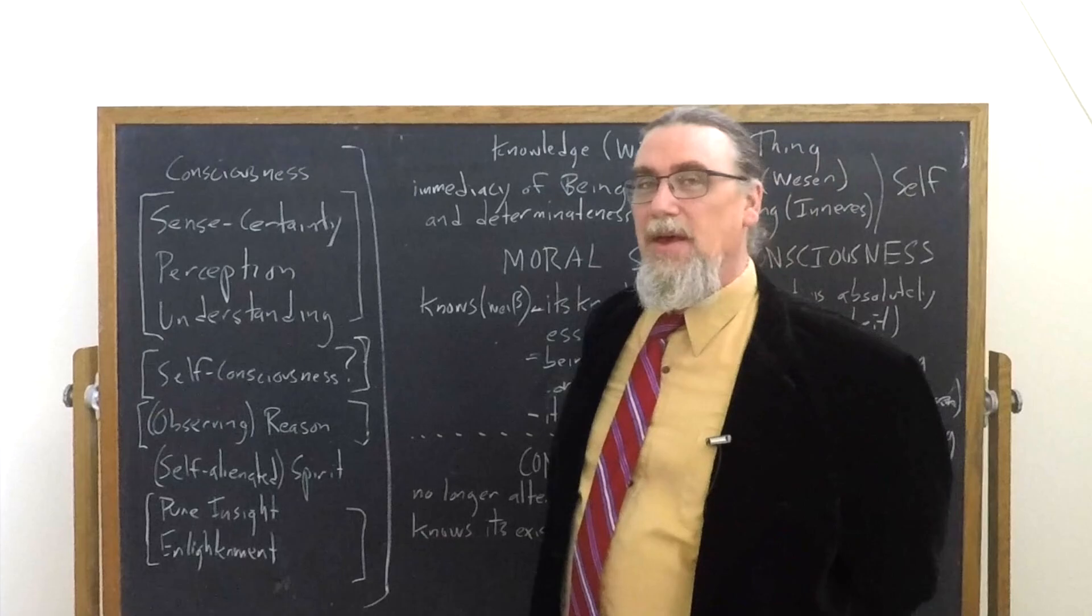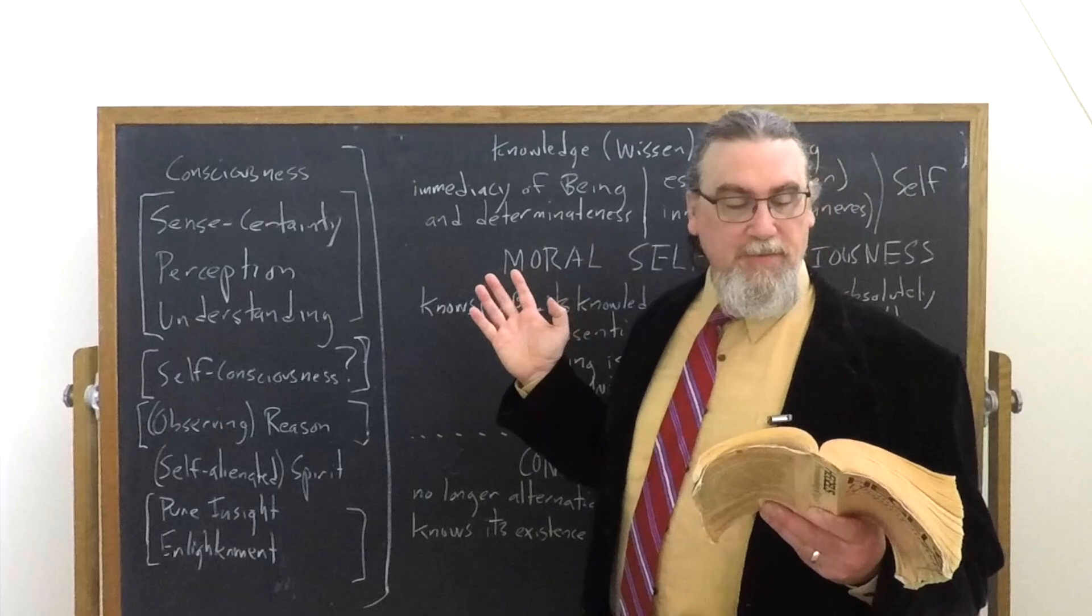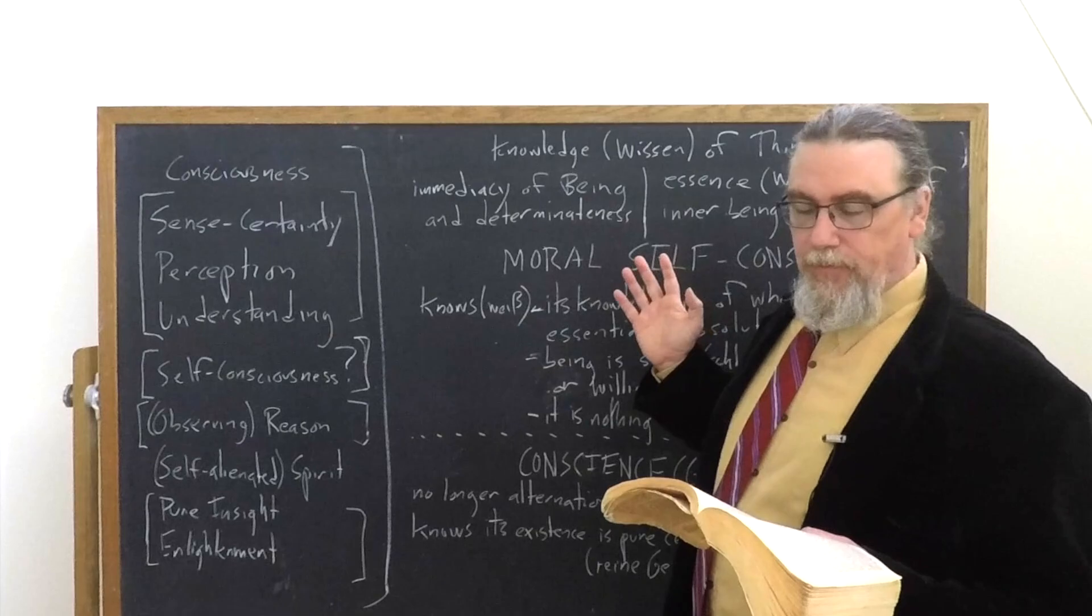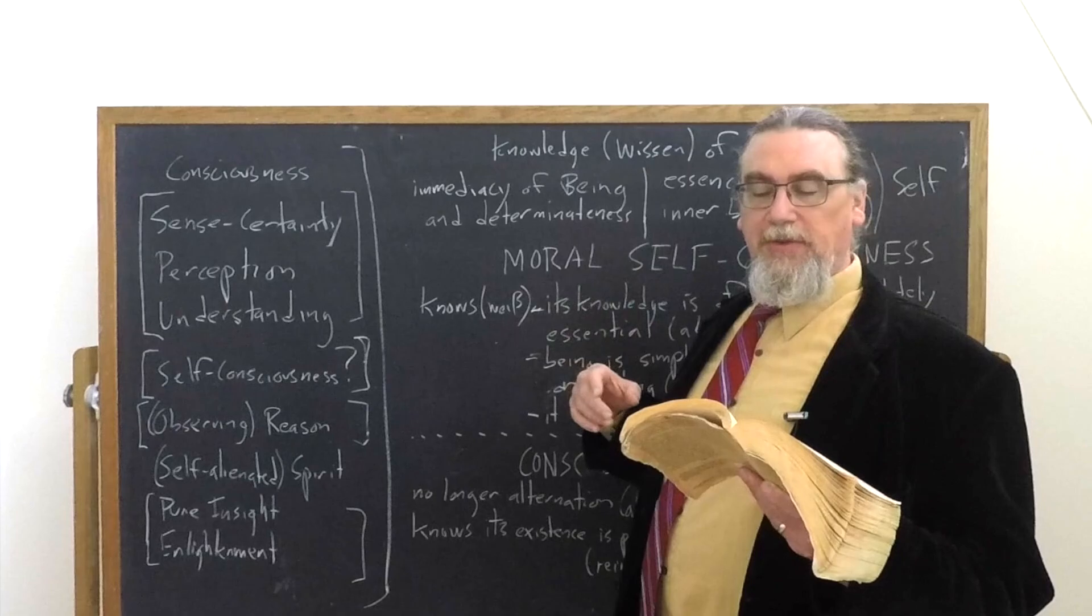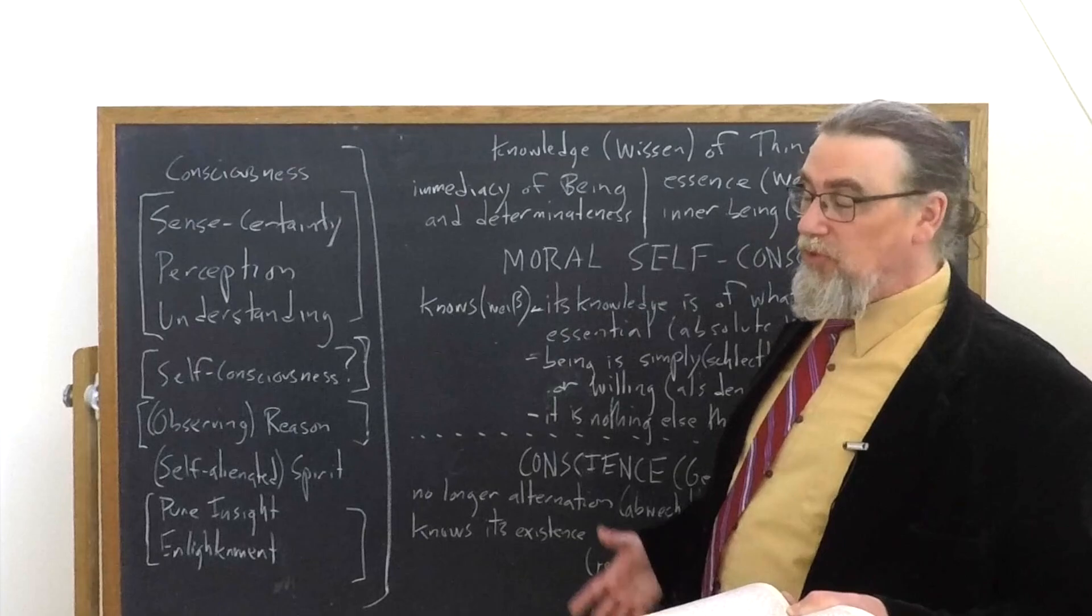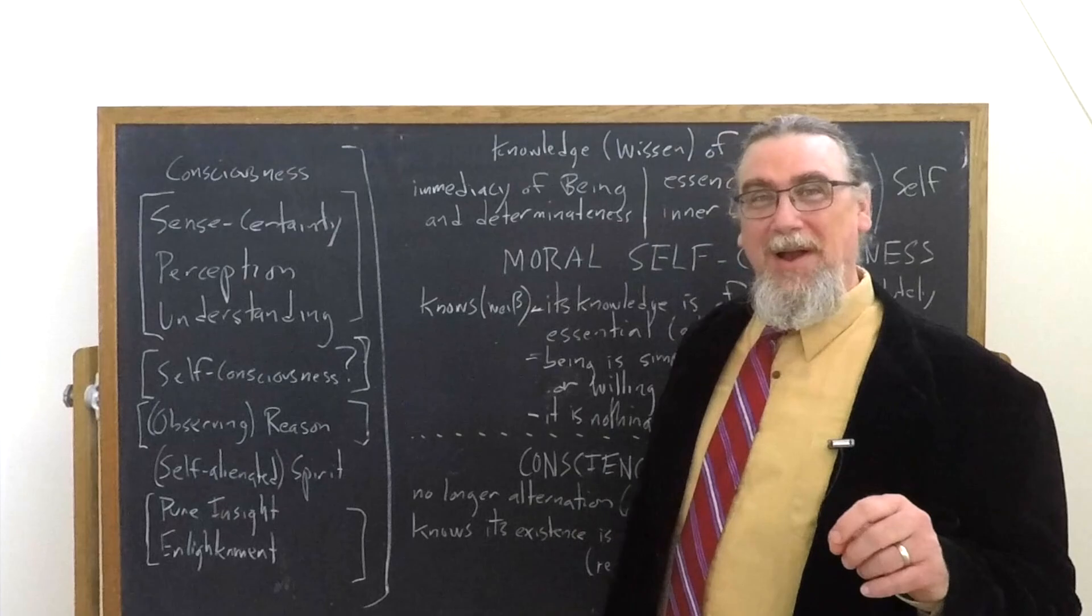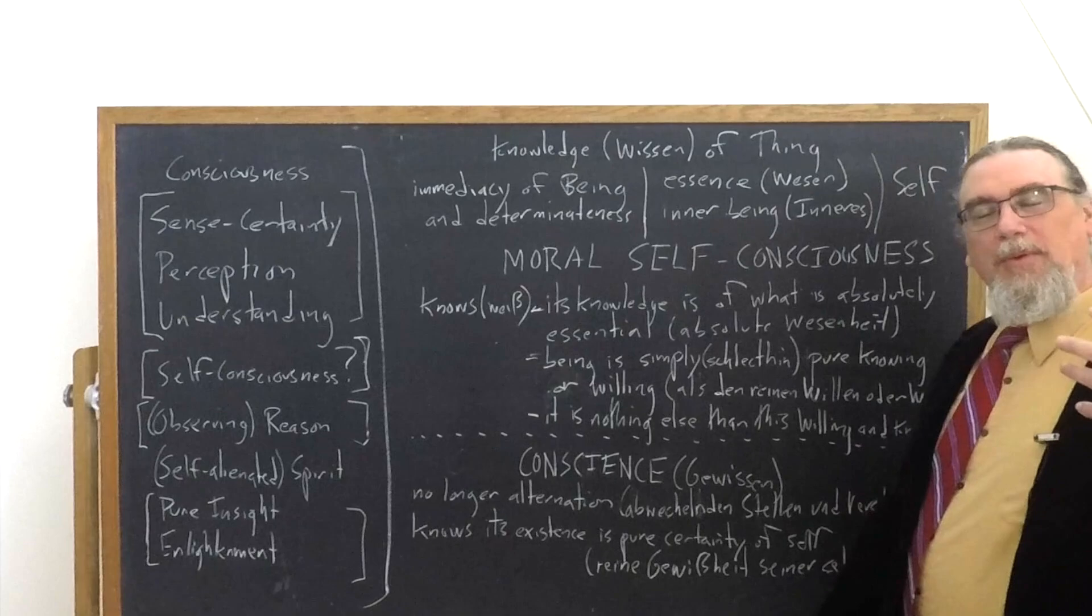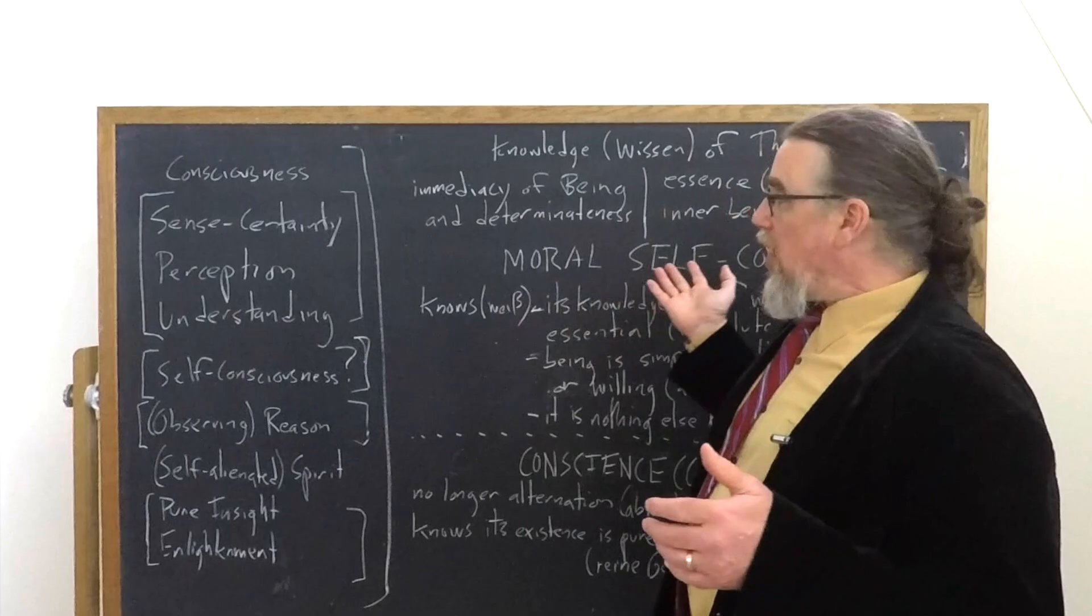What else does it know? It knows that being is solely and simply, schlecht hin, pure, reiner, willing and knowing. It's interesting here that Miller changes the oder to something slightly different. It's really simply and solely pure willing and or knowing. Does this matter much? I think that the or makes these things a little bit closer. You can look at it this way, or you can look at it this way, but really these are both intimately connected with each other.